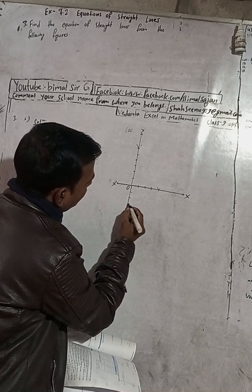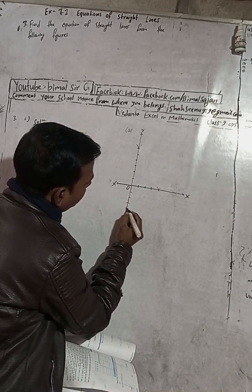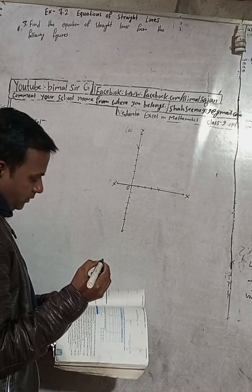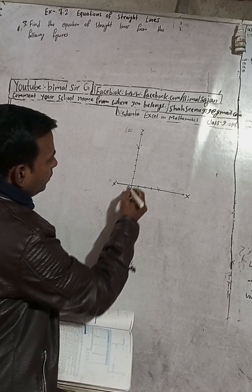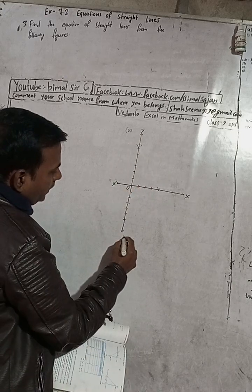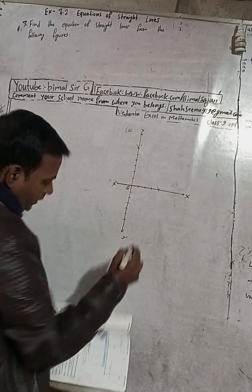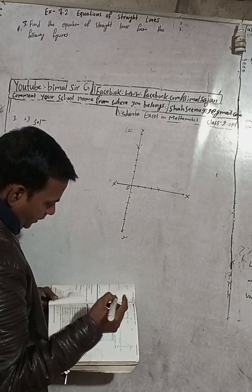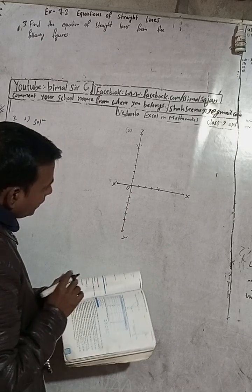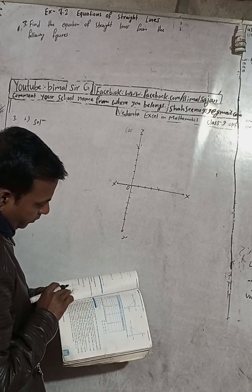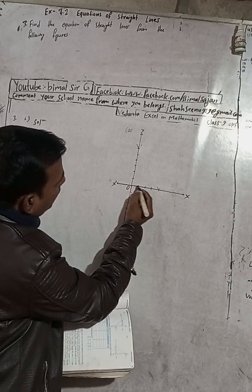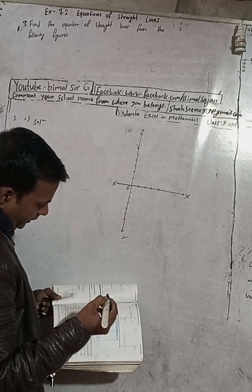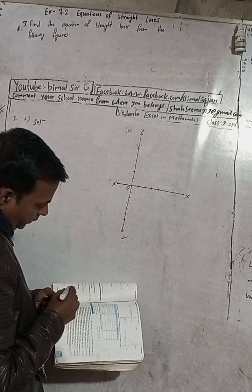Counting on the graph: 1, 2, 3, 4, 5, 6 — this is the origin. The y-axis, y-dash. From the origin, 4 units are taken to the right along the x-axis, so the A point is at (4, 0).